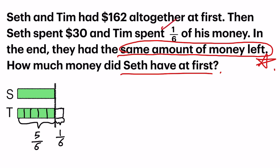Now let's go to Seth. Seth spent $30. The size of the $30 doesn't matter as long as you label it. We've got one last piece of information — the sum. The first sentence indicated that they had $162 altogether.